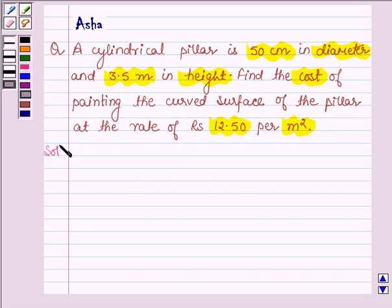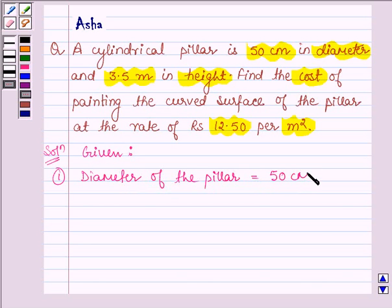Let's begin with the solution. First, the diameter of the pillar is equal to 50 cm. This implies that the radius of the pillar, denoted by r, is equal to 50 cm divided by 2, which equals 25 cm.